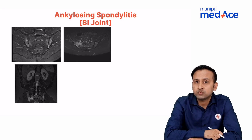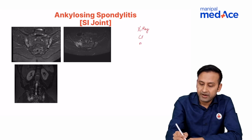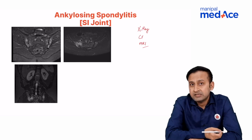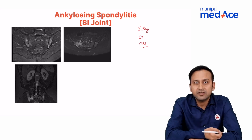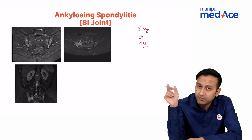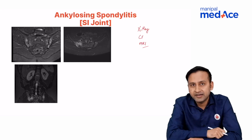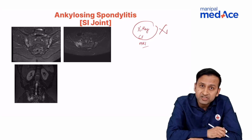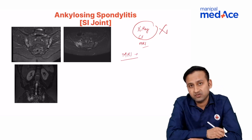Since SI joints are the first involved, which investigation — X-ray, CT, or MRI — is best for early sacroiliitis? Ankylosing spondylitis causes inflammation and edema. X-rays and CT show only the bony cortex; edema occurs in the marrow, which neither X-ray nor CT can show. MRI is the investigation of choice for early sacroiliitis. The specific sequence is STIR — Short Tau Inversion Recovery — which suppresses fat so inflammatory and edematous areas shine out brightly.